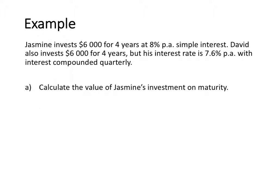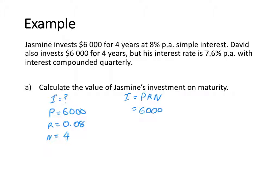For Jasmine, we're going to calculate it using simple interest. We are trying to find the interest amount. The principal is $6,000, the interest rate is 0.08 — that's 8% divided by 100 to convert it into a decimal — and the number of years is 4. So interest equals PRN, which equals 6,000 times 0.08 times 4. Jasmine's interest is going to be $1,920.